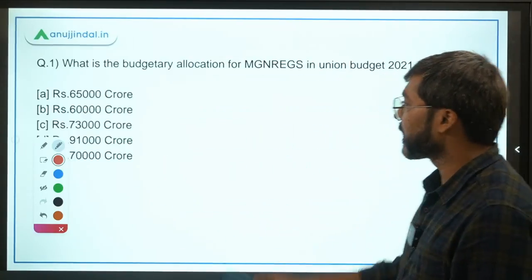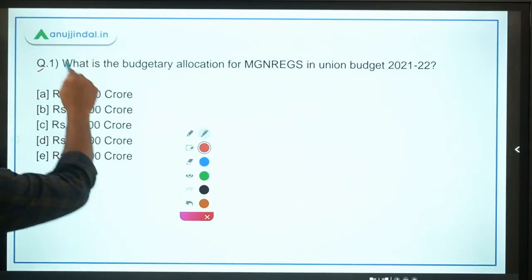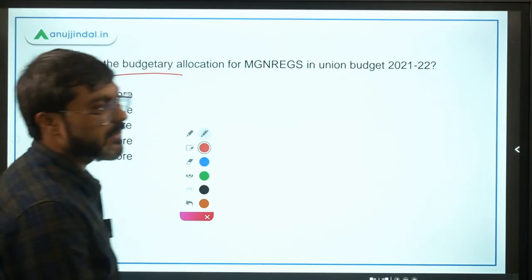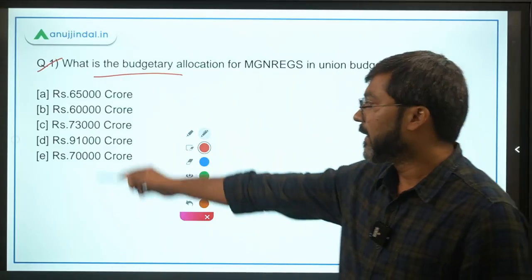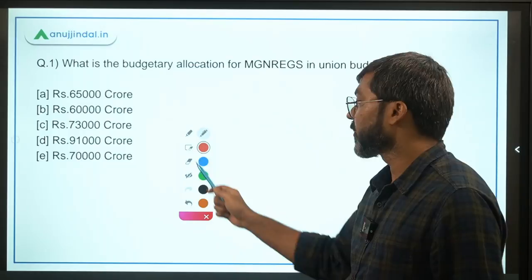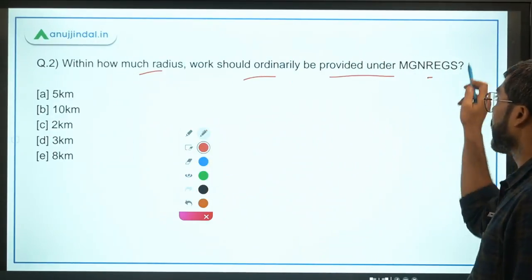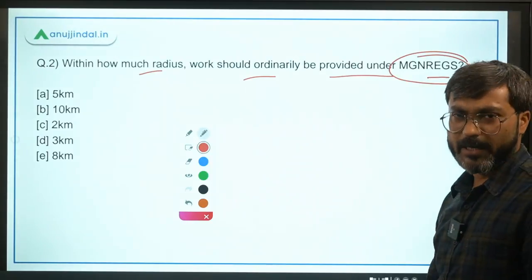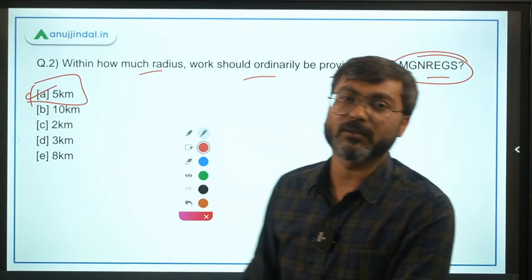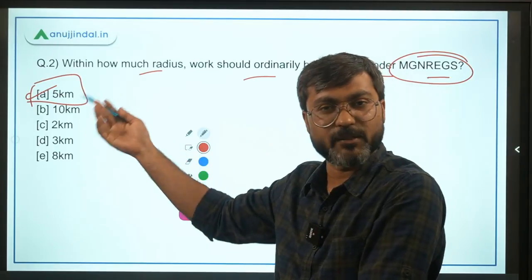Now let's talk about exam questions from this scheme. Question 1: What is the budgetary allocation for MGNREGA in Union Budget 2021-22? The answer is Rs. 73,000 crore — option C. Question 2: Within how much radius should work ordinarily be provided under MGNREGA? The answer is 5 km — option A. If work is beyond 5 km, 10% of the wage rate must be paid as extra allowance.